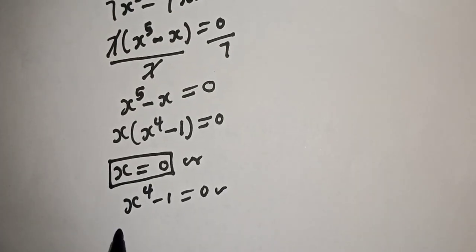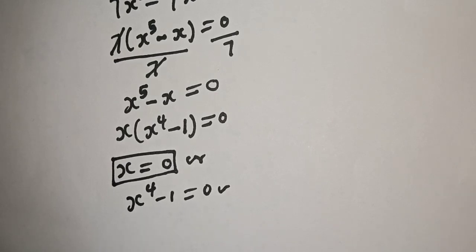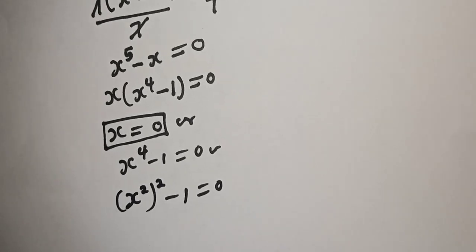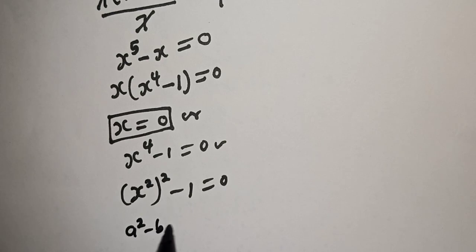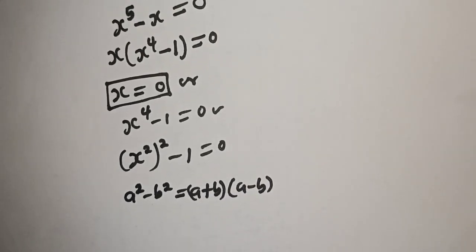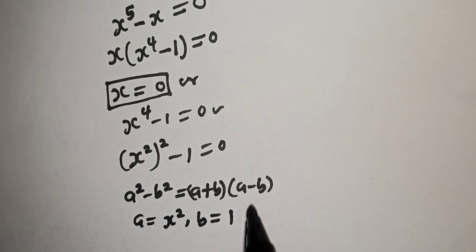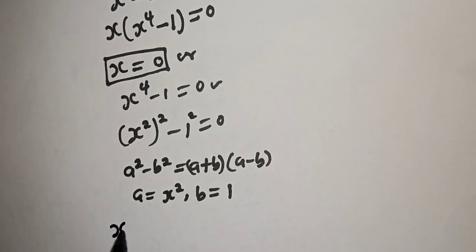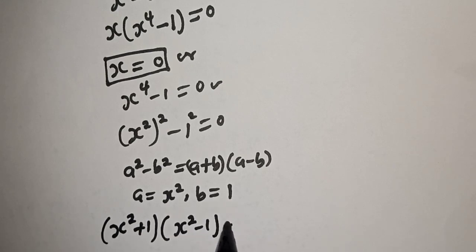Let's solve from the second case. x raised to power 4 minus 1 is equal to 0 can be written as x squared, squared minus 1 is equal to 0. Using the rule that a squared minus b squared equals a plus b multiplied by a minus b, where a equals x squared and b equals 1, and 1 is the same as 1 squared. So we have x squared plus 1 multiplied by x squared minus 1 is equal to 0.